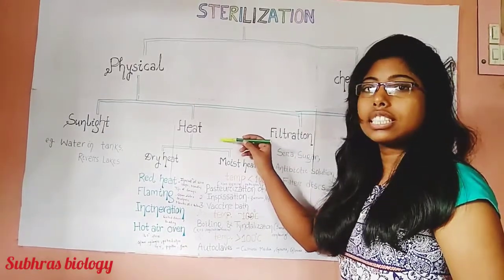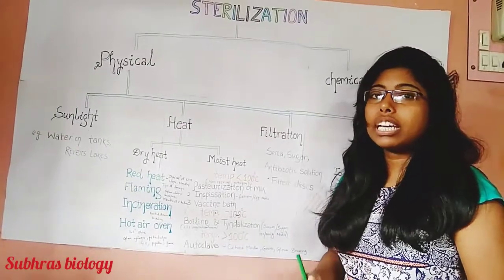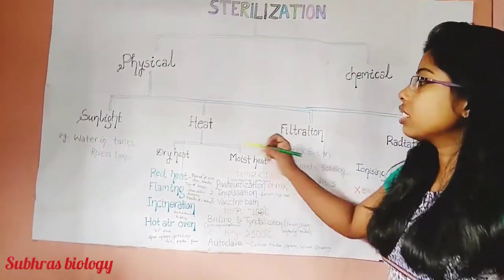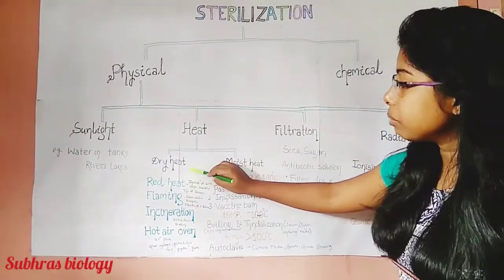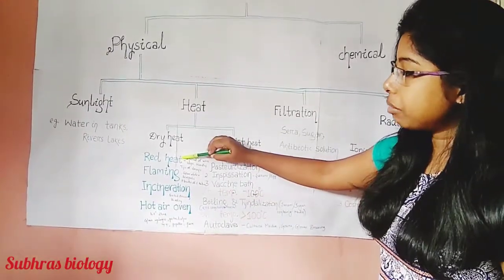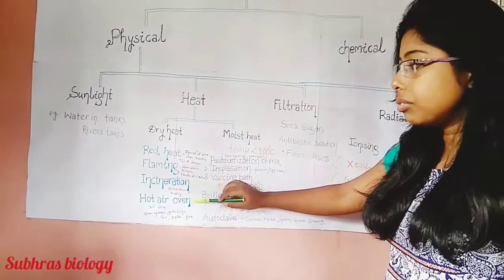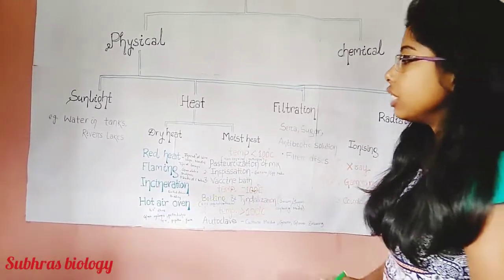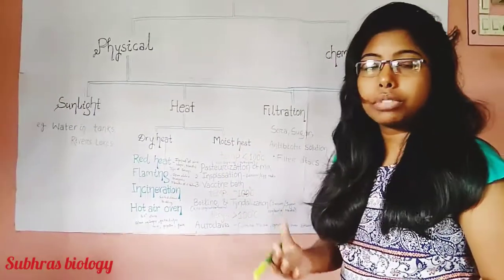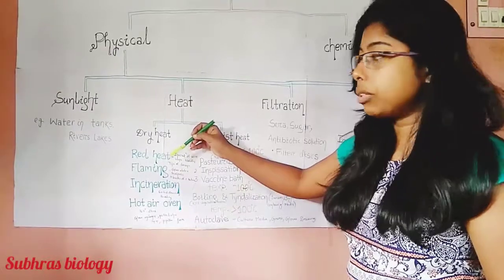The second type of physical sterilization is heat. Heat kills microorganisms by denaturation of bacterial proteins. It is divided into two types: dry heat and moist heat. Dry heat procedures contain four types: red heat, flaming, incineration, and hot air oven. In red heat, inoculation wire loops, needles, tweezers, or forceps are sterilized.